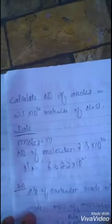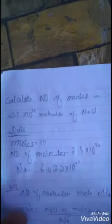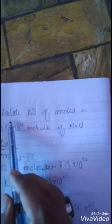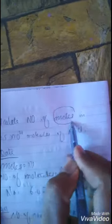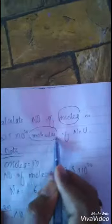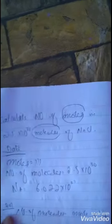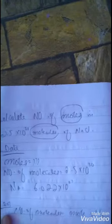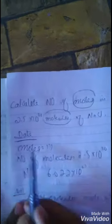Now, we consider one more numerical with a new concept. You can see, we have to calculate moles — calculate the number of moles with the given molecules. When molecules are given, the same relation is Avogadro's.